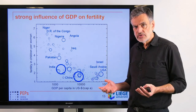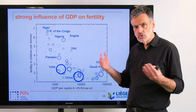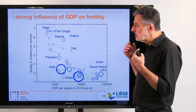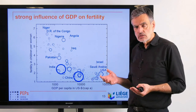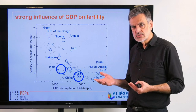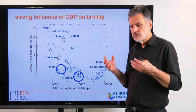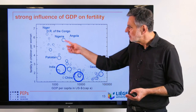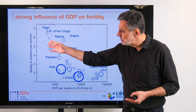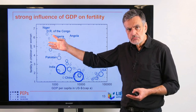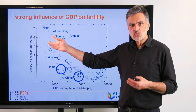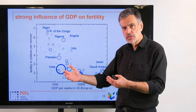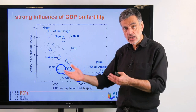Two children per couple is sustainable: two parents are on the long term replaced by two children, and the world population would stabilize. Unfortunately, we have a quite large number of low-income countries where the number of children per couple is significantly higher.